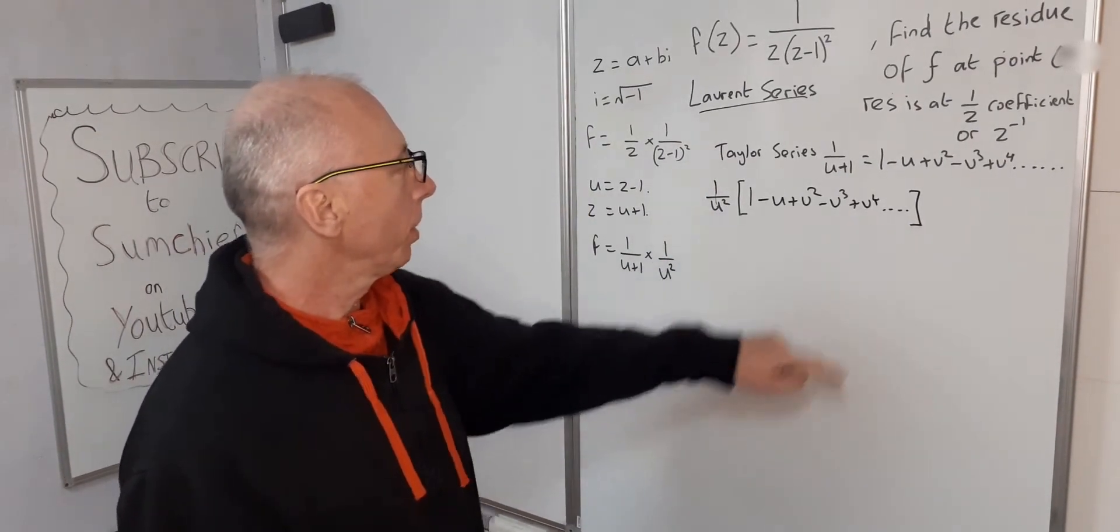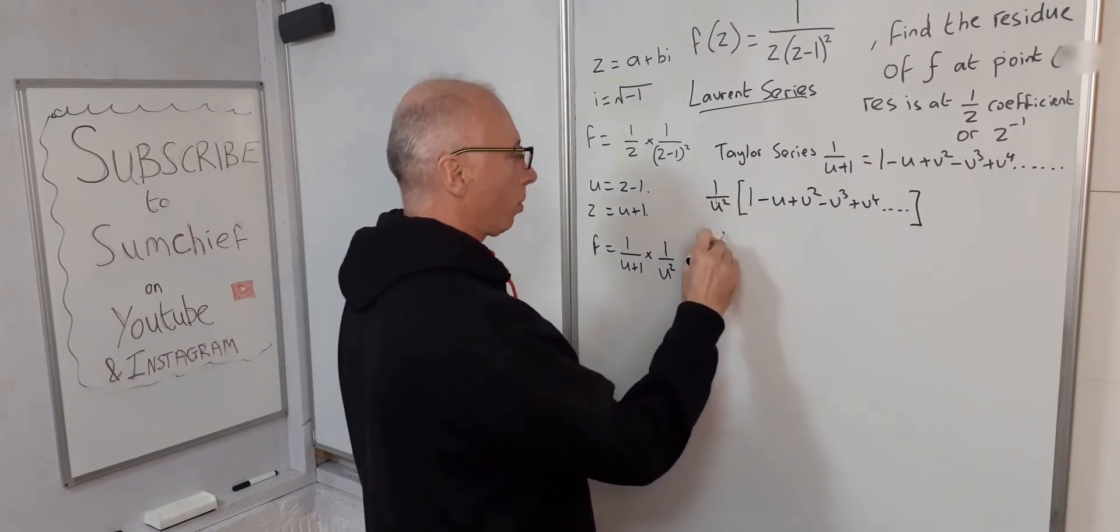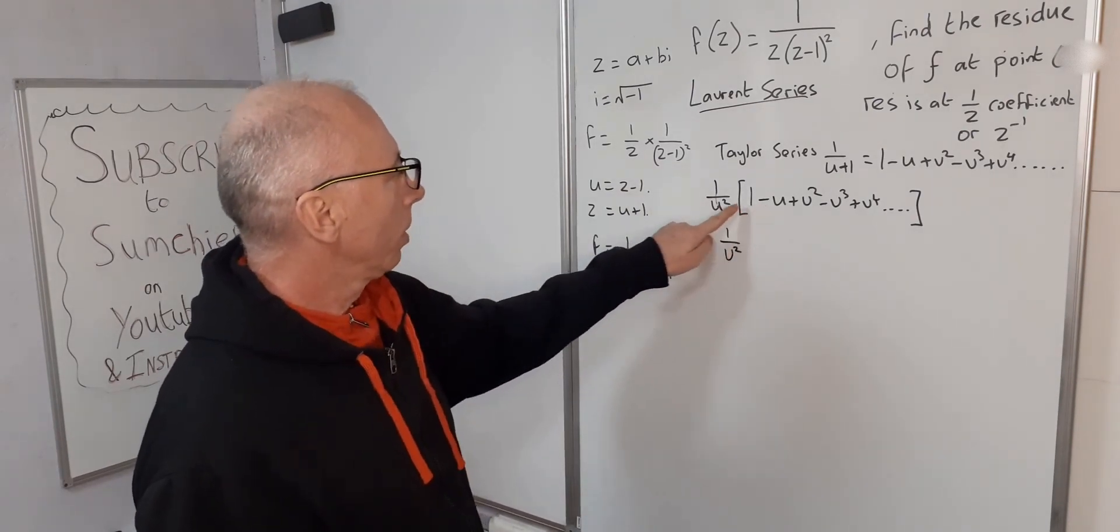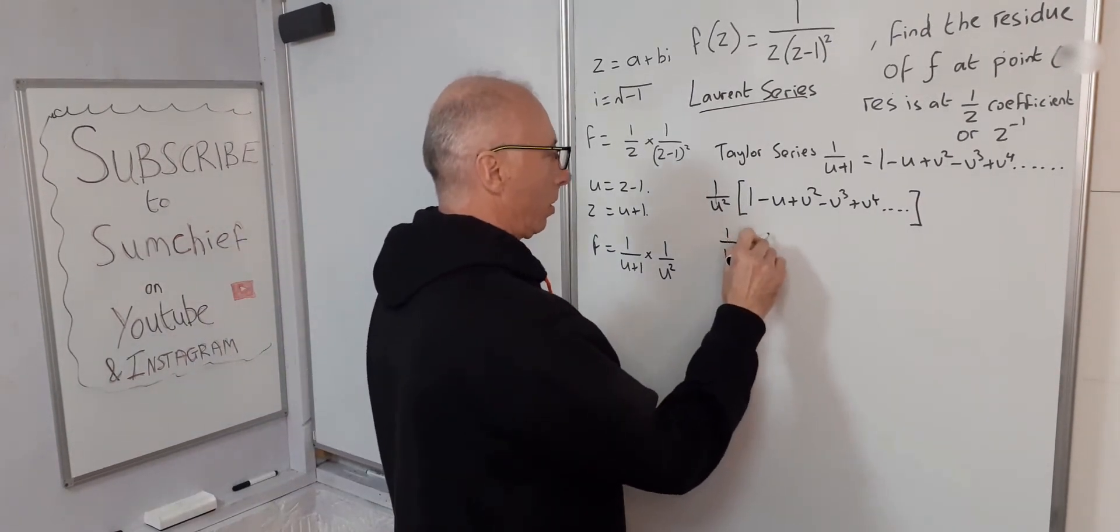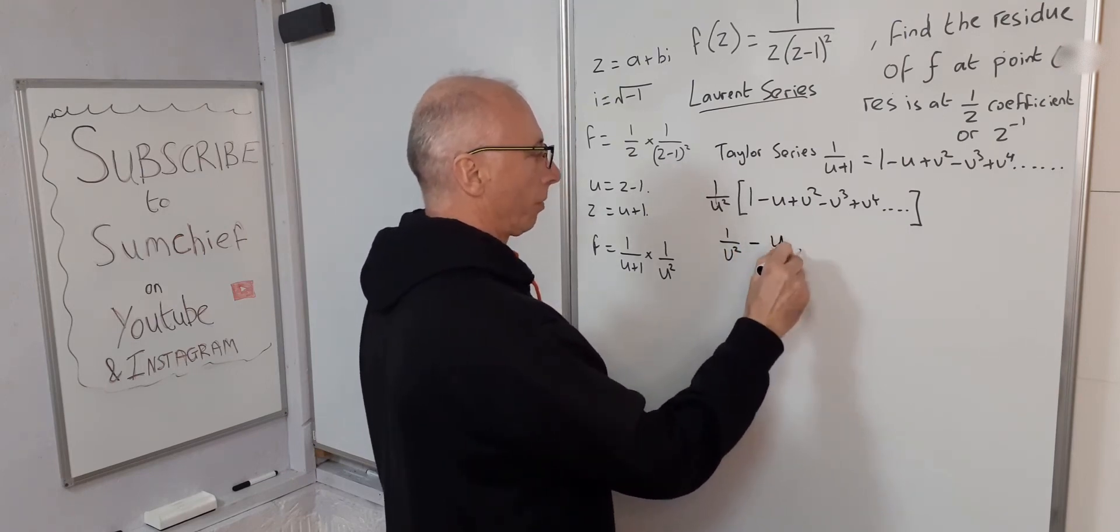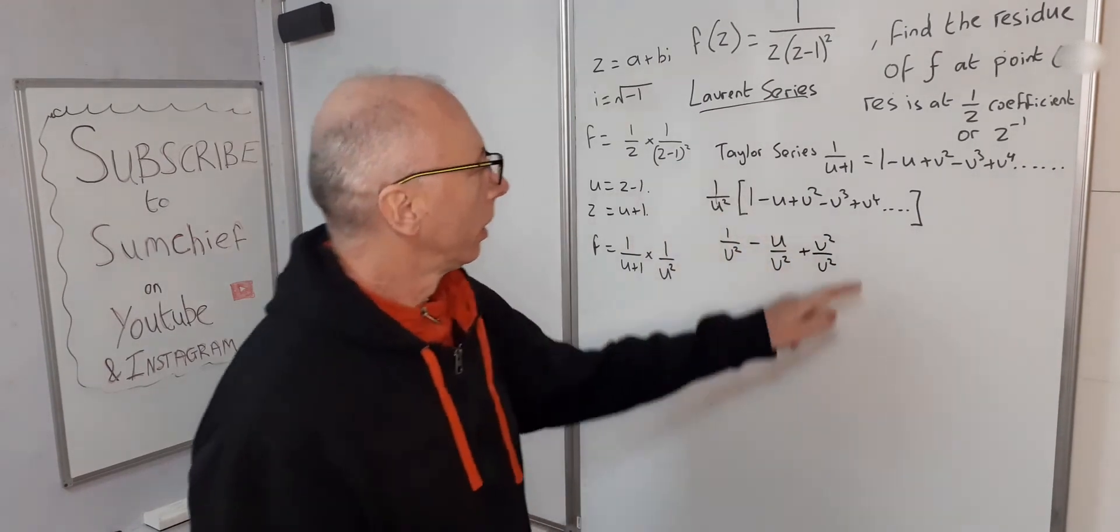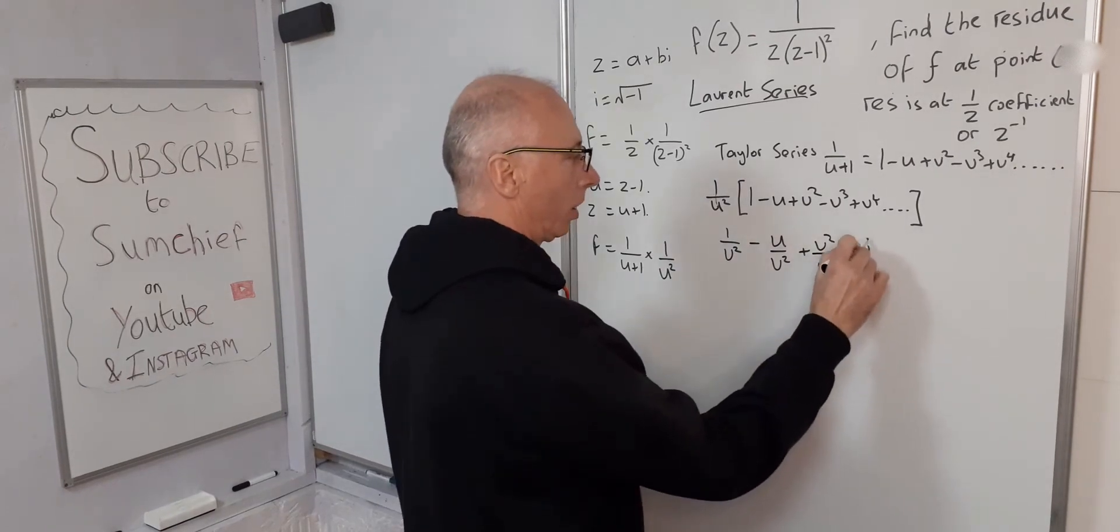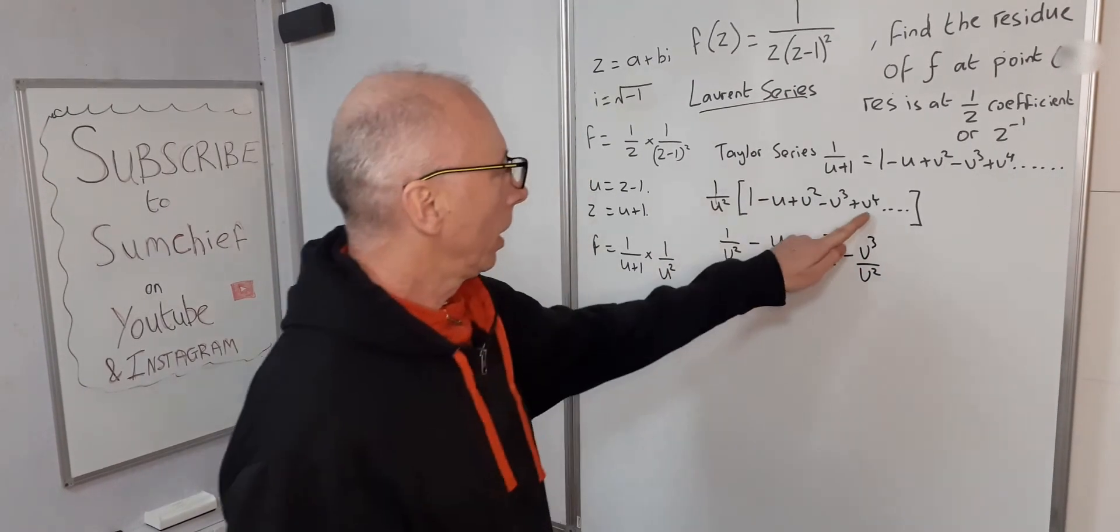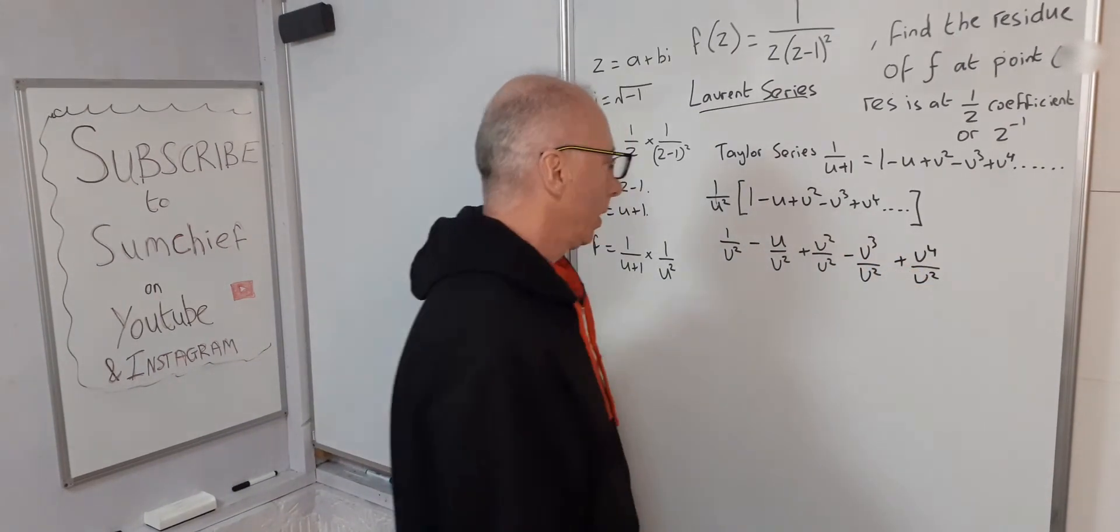Okay let's multiply that through and see where that takes us. So we end up with 1 over u squared, and then minus u times 1 over u squared, so that's minus u over u squared, plus u squared over u squared. u cubed, that's minus u cubed over u squared, and then u to the 4 and u squared.